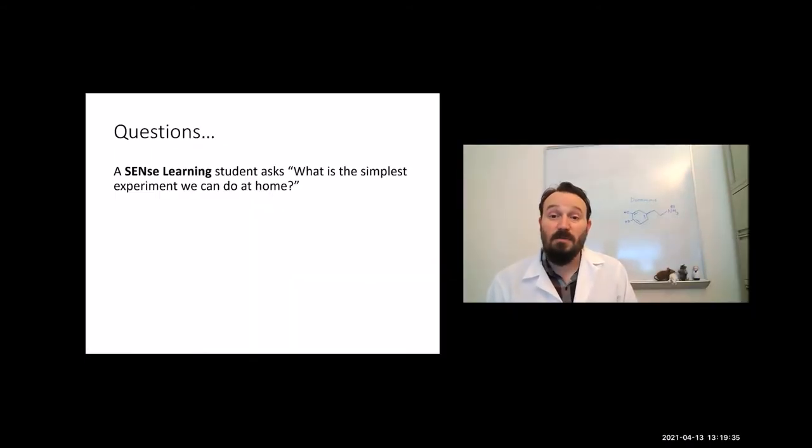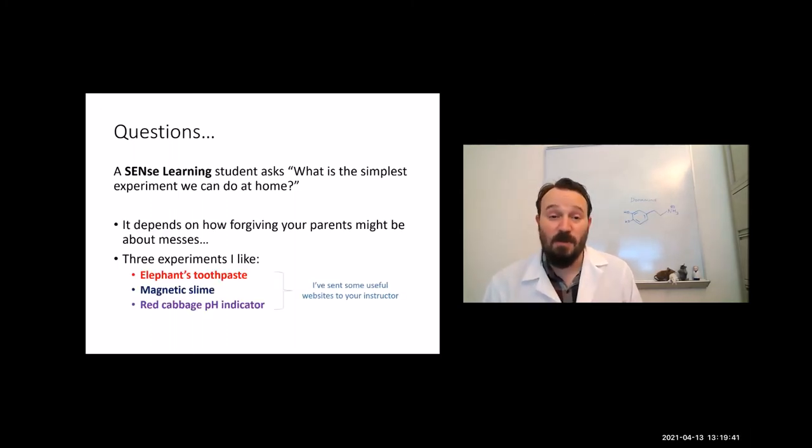A Sense Learning student asked, what is the simplest experiment we can do at home? There are so many fun experiments that you can do at home, but because I'm in a chemistry department, I'm going to show you three that are definitely favorites around here. They all depend on your parents being somewhat forgiving about possible messes. Three experiments that I like are Elephant's Toothpaste, Magnetic Slime, and Red Cabbage pH Indicator. I'm not going to give you the recipes here, but I had sent some useful websites to your instructor, so maybe you can convince your parents to try some of these experiments at home. They typically involve things you might already have in your house or are relatively easy to get.